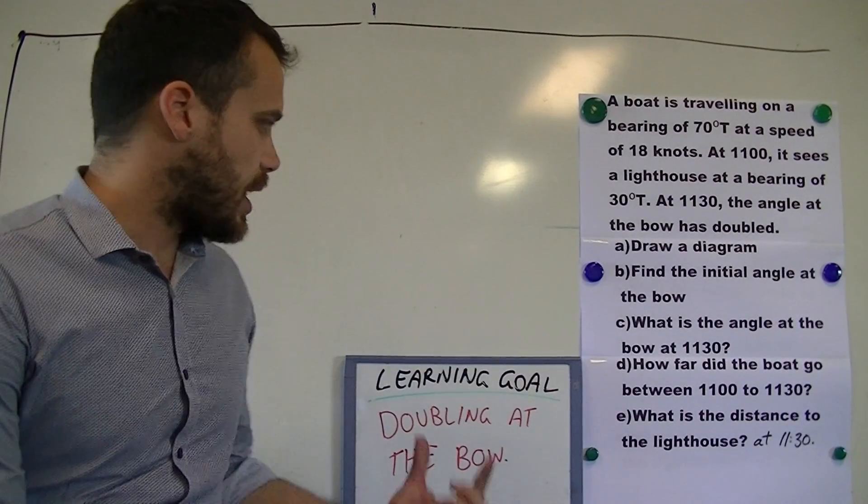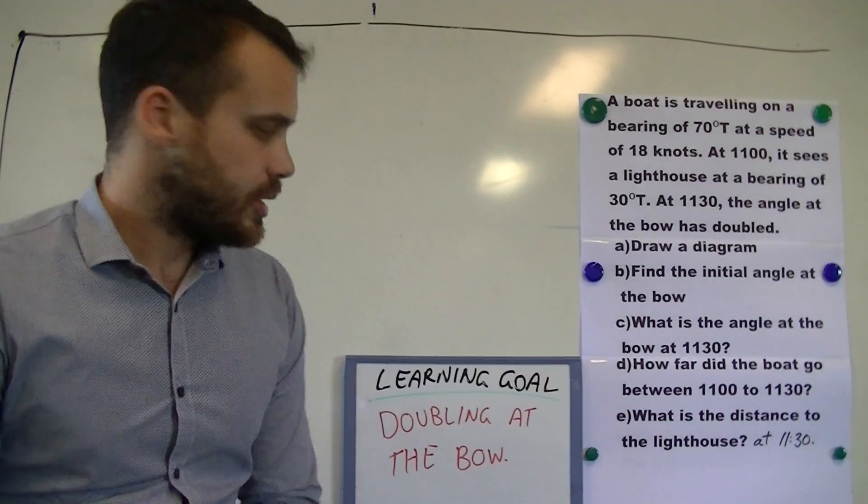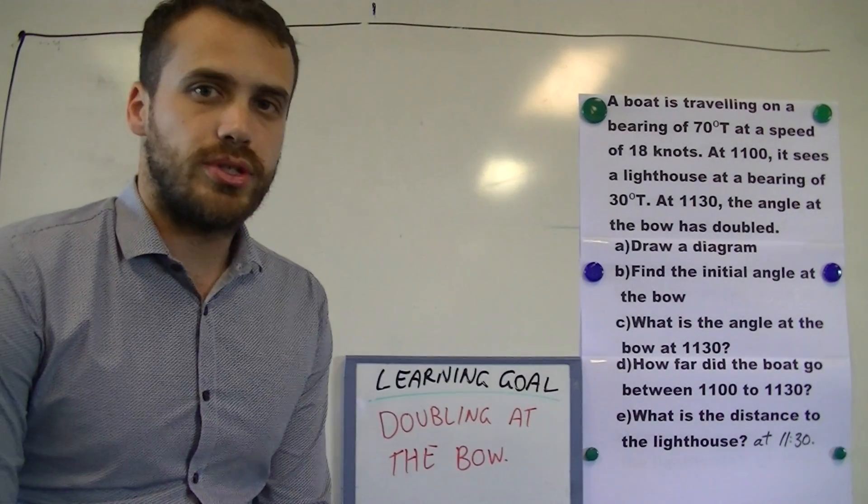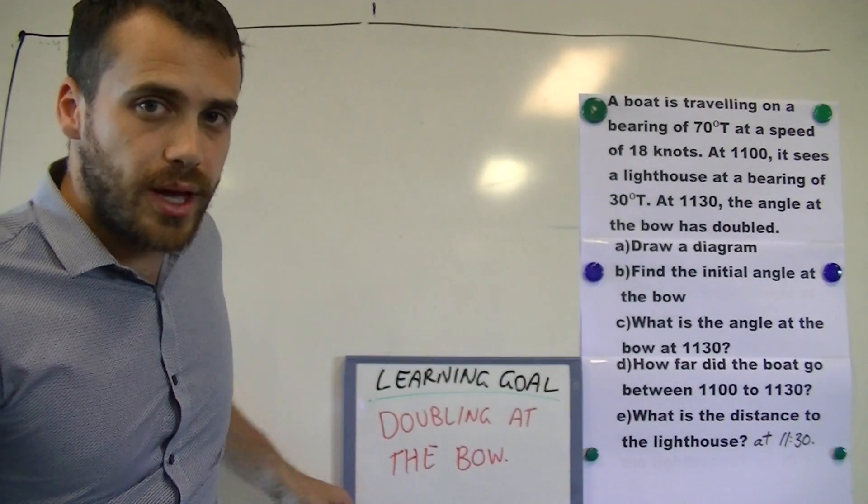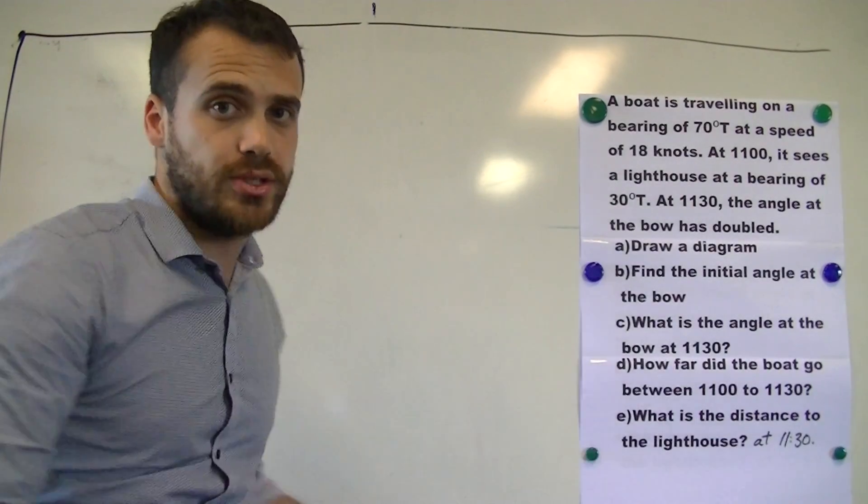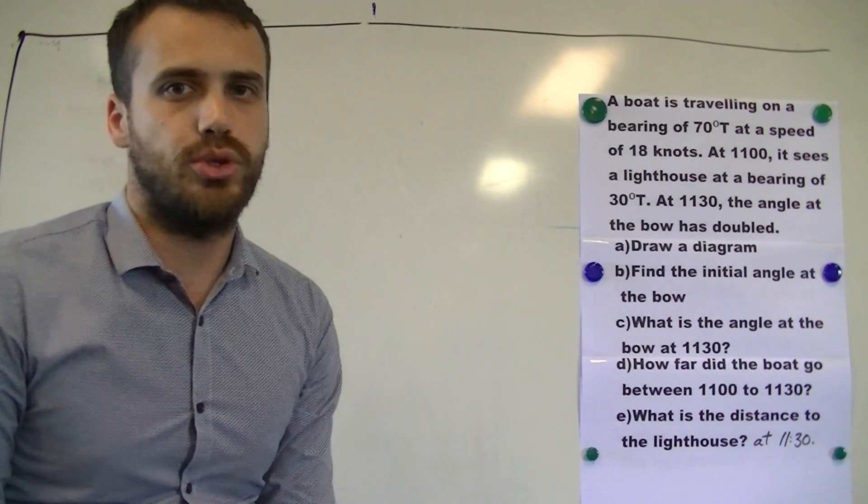In this video we're looking at doubling at the bow. Let's take a look at a question so we can see what doubling at the bow looks like. Now doubling at the bow is a method of navigation which allows you to find out a distance to an object.